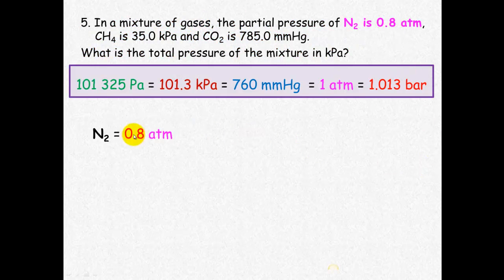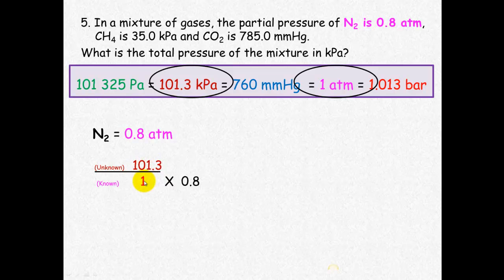So the first thing we need to look at is nitrogen which is 0.8 atmospheres and the way that we work that is our unknown divided by our known. We work out the ratio times the information we have. So unknown divided by known which is 101.3 is our unknown. One is our known times the information that we have here and we get an answer of 81.04 kilopascals. That's just nitrogen.